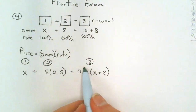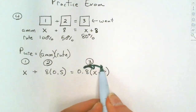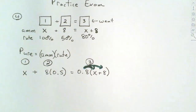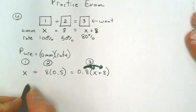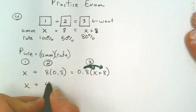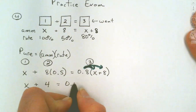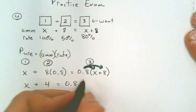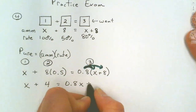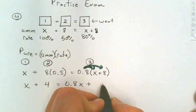On our first box we have 100%, so that's 1 times X, making it X. Our second container is 8 times 0.5 because that's 50%. On the right-hand side we have 80%, so that's 0.8, and how much is in there? X plus 8 — that's box three. Parentheses go first, so we'll distribute that 0.8 through. So we have X and half of 8 is 4, and that equals 0.8 times X. Distributing through: 0.8 times 8 is 6.4.